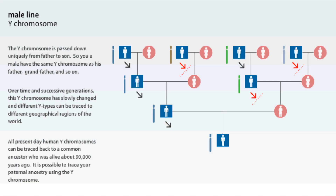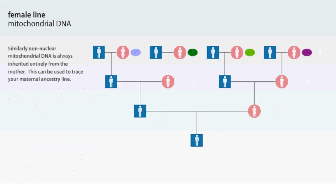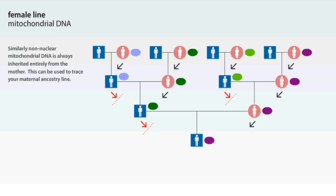All present-day human Y chromosomes can be traced back to a common ancestor who was alive about 90,000 years ago. It's possible to trace your paternal ancestry using the Y chromosome. Similarly, non-nuclear mitochondrial DNA is always inherited entirely from the mother. This can be used to trace your maternal ancestry line.